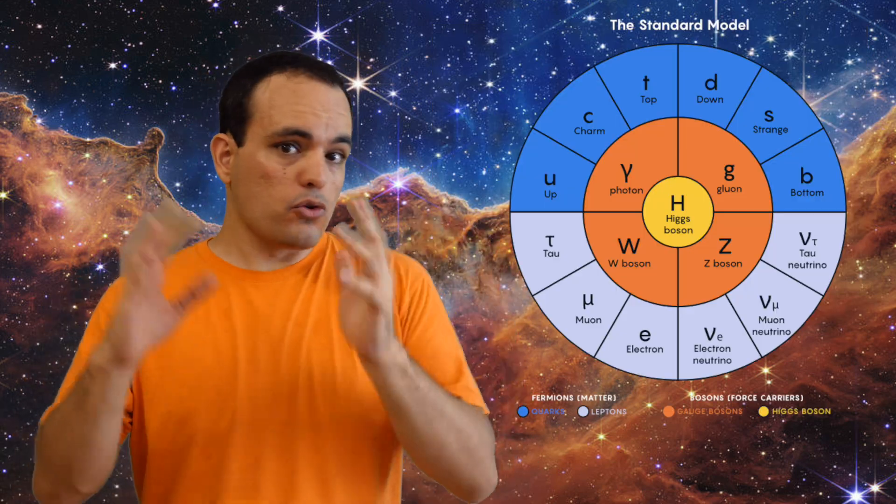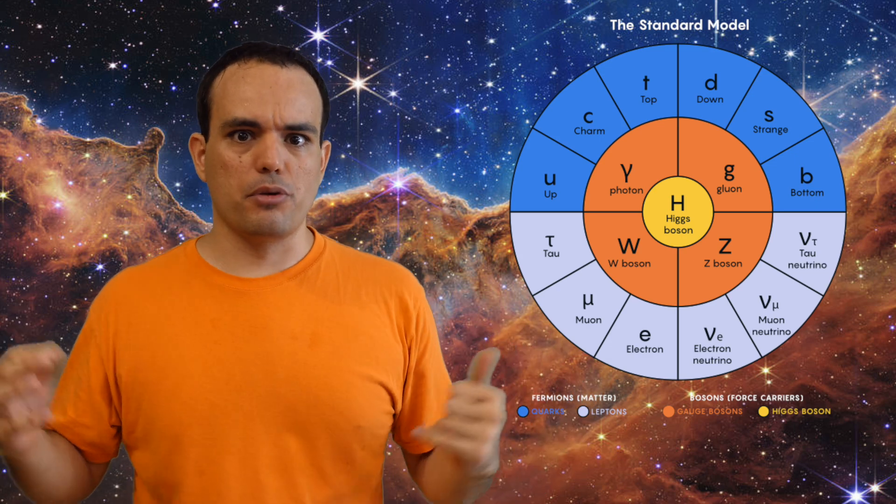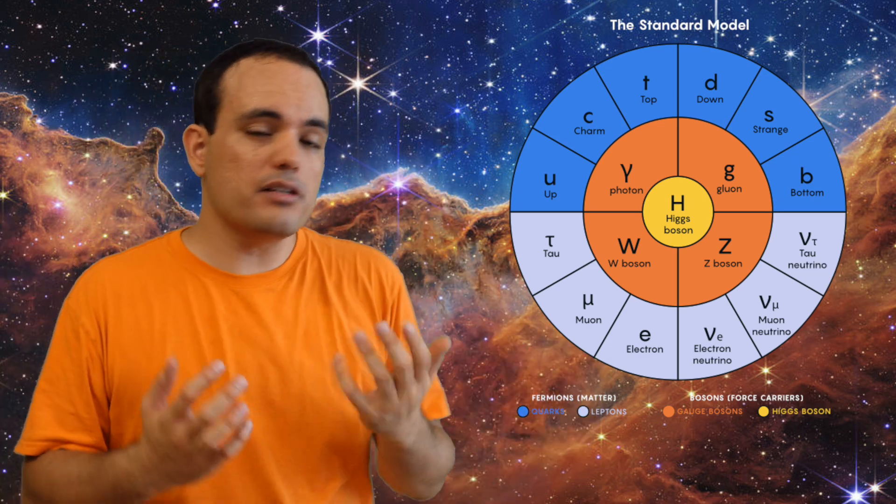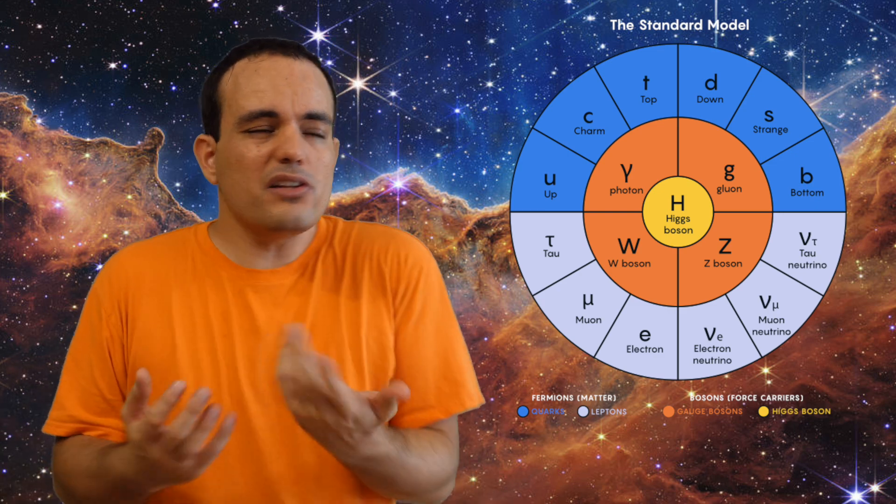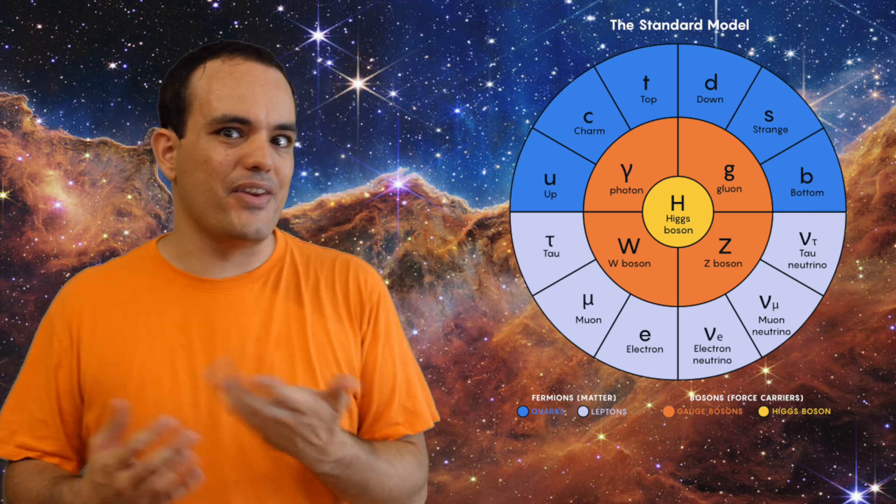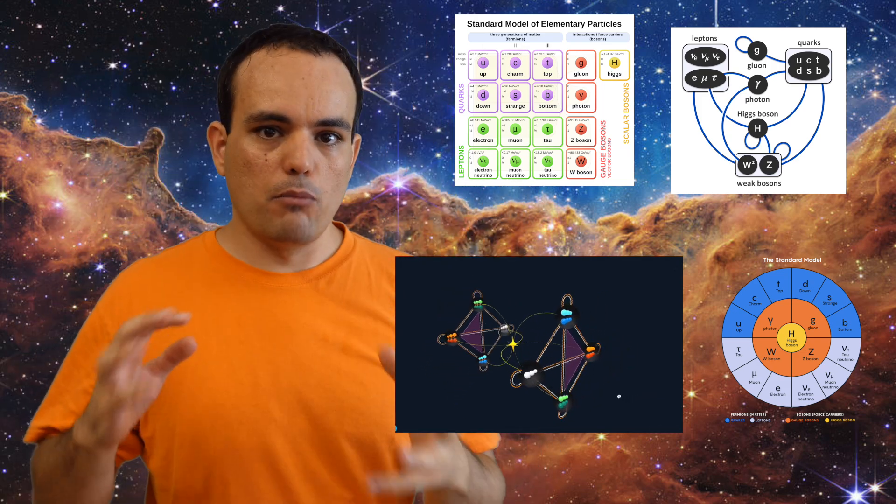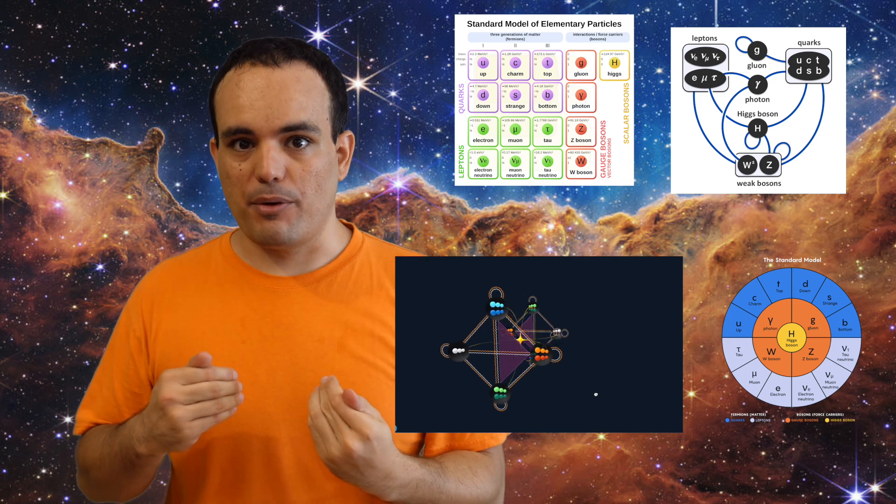And finally, if all you want to communicate is that the Higgs boson exists, you could use this one, I guess. It is my least favorite one. It tells you pretty much nothing other than the names of the particles. But none of these diagrams present the standard model in the way I think about it.